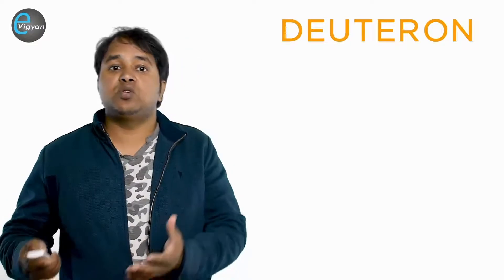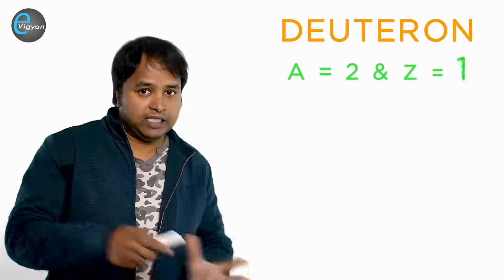The deuteron is the nucleus of the isotope of hydrogen, deuterium. The deuterium has A equal to 2 and Z equal to 1.